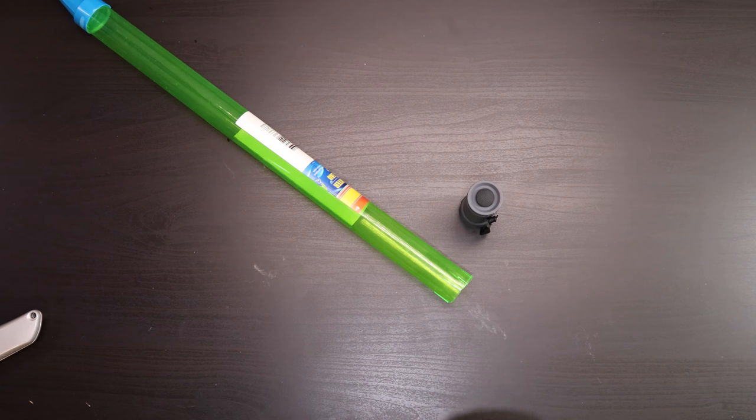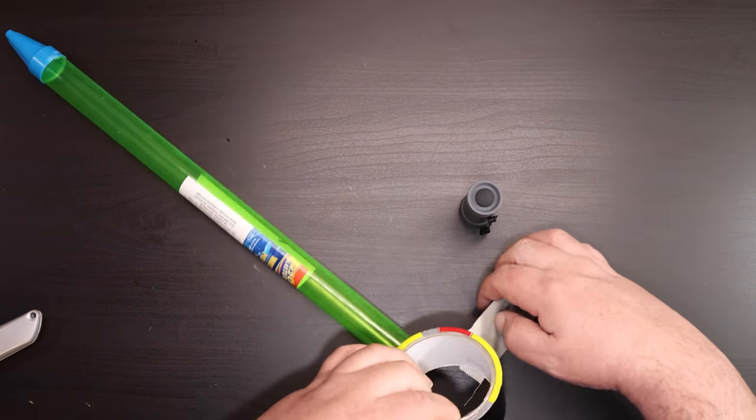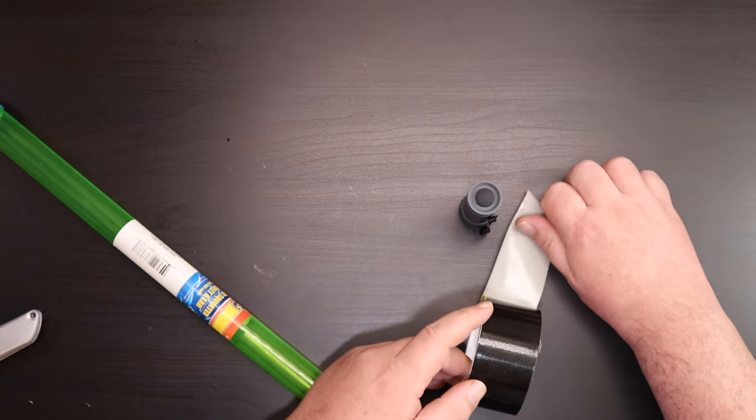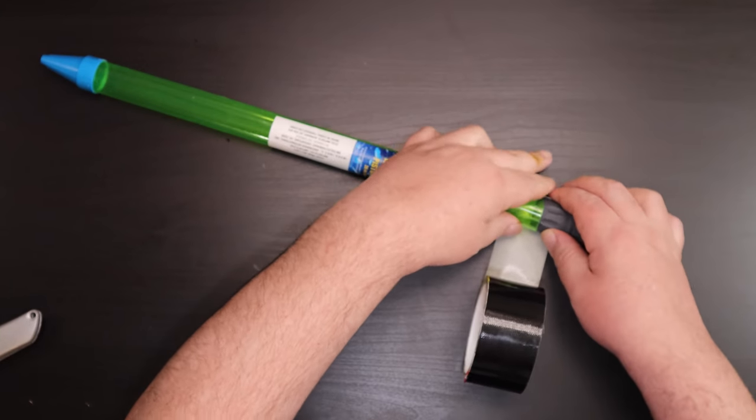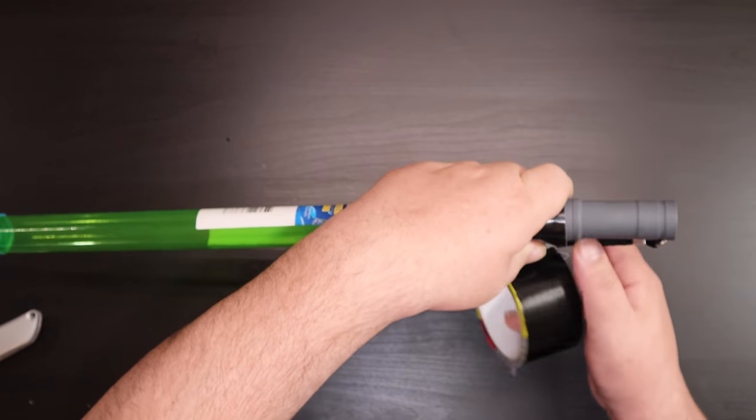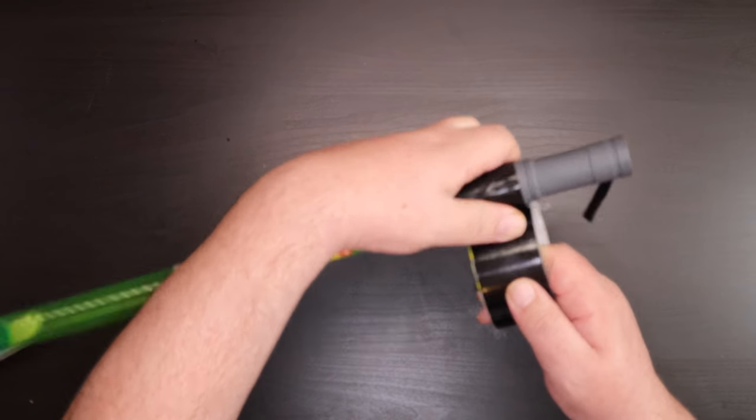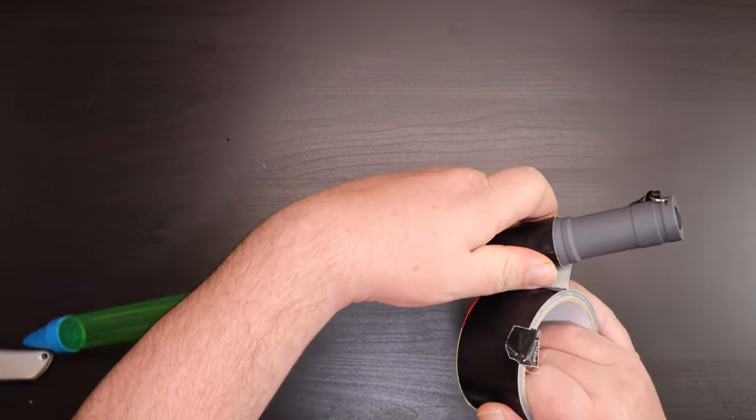We're going to take a small piece of duct tape, lay it down, put the flashlight in the light tube on the duct tape and just roll it. You don't need too much, just a couple layers will hold it just fine.